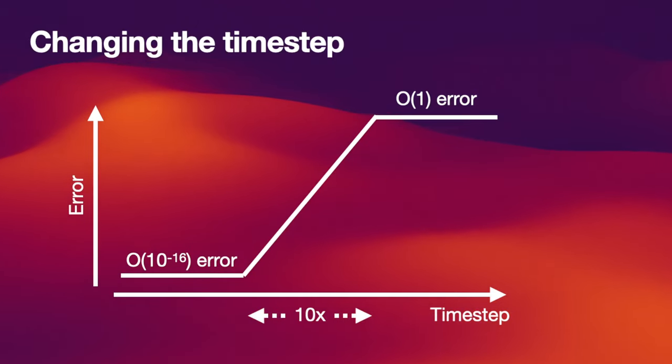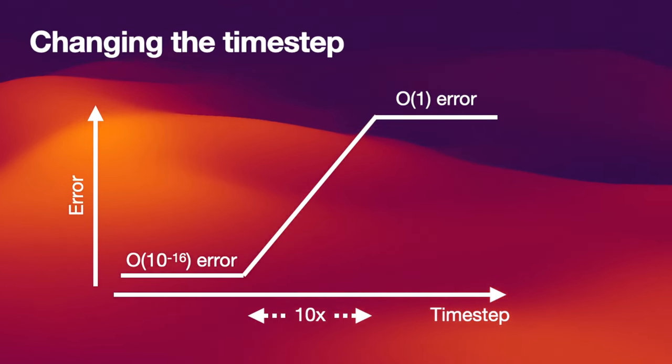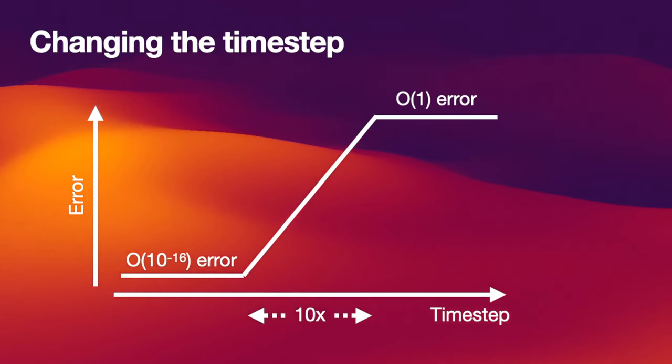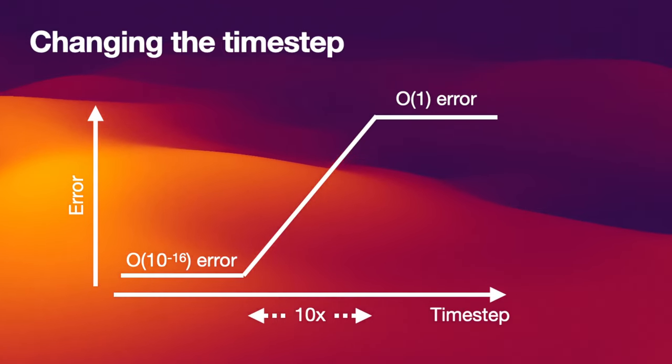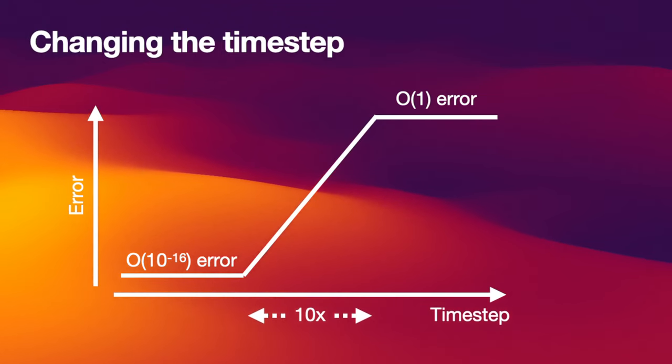So, changing the time step in IAS15 manually is in general not a good idea. The automatic adaptive time step tries to find a good time step that is somewhere on the left-hand side of this plot, and if you manually intervene, you're most likely to push it all the way to the right and not get physical results anymore.